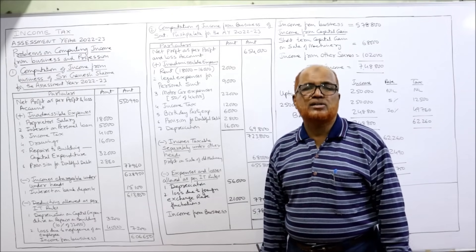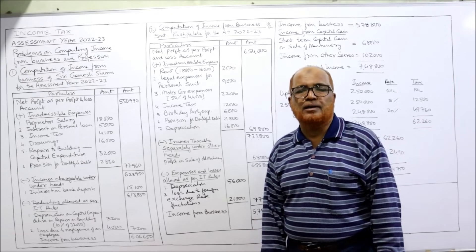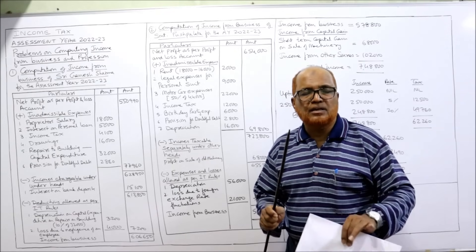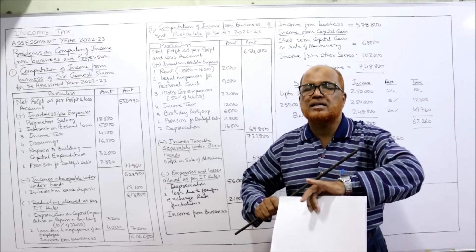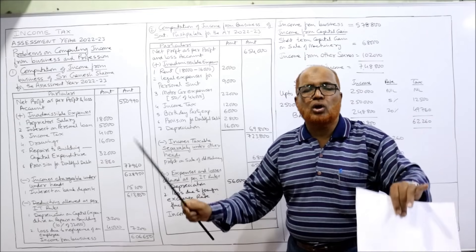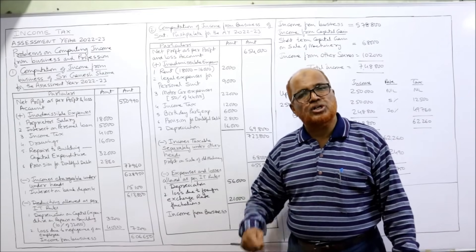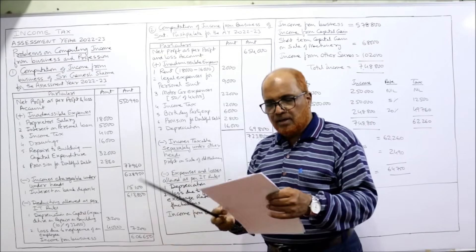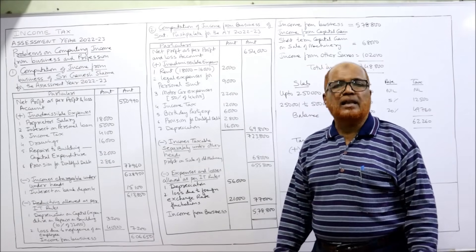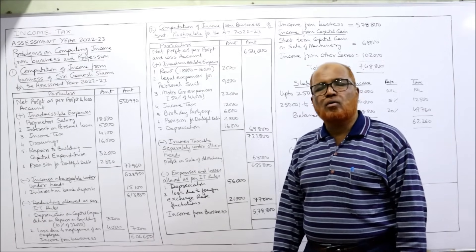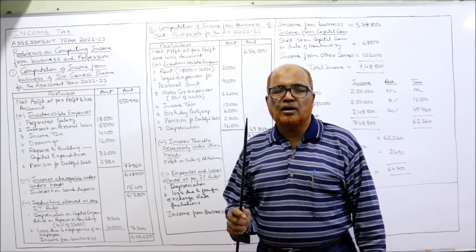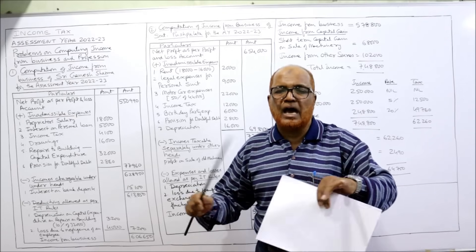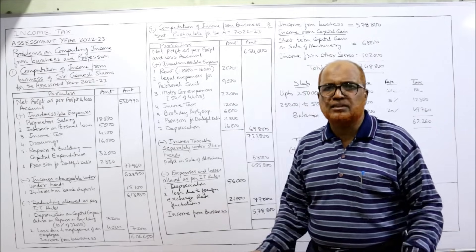Printing and stationery — allowed. Income tax is a personal tax, so income tax debited to the profit and loss account is not allowed as deduction. Write this down: income tax debited to P&L account is not allowed as deduction — disallowed, inadmissible. Cost of new telephone connection: according to the ruling, this expenditure is also allowed as deduction. Whatever is allowed, ignore it; whatever is disallowed, take it as inadmissible.